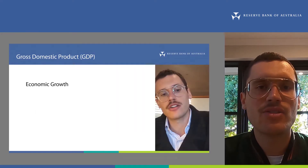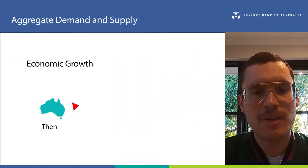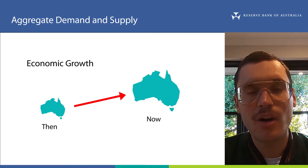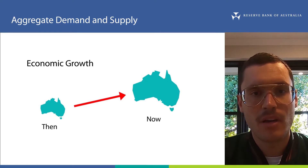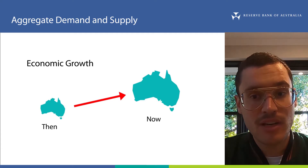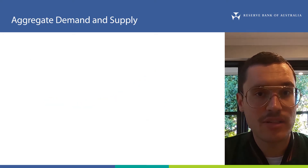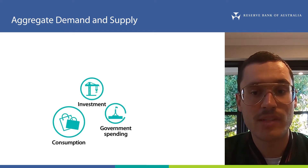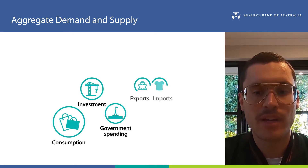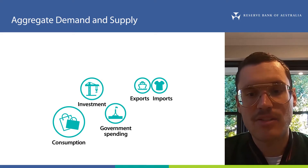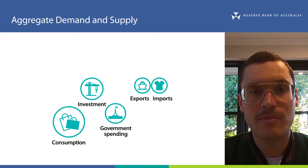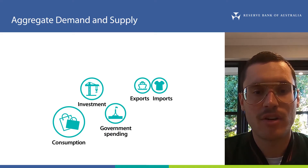In a related video on GDP we discussed how GDP expenditure measures the total amount of spending on goods and services in the economy over a period of time. We can separate the spending in GDP into different categories: consumption, investment, government spending, and exports and imports. You can find more details on these types of spending and what influences them in the explainer on economic growth.